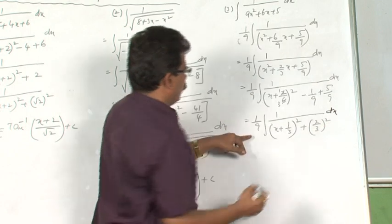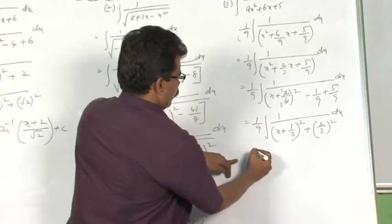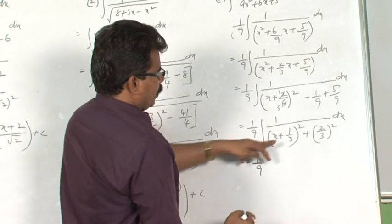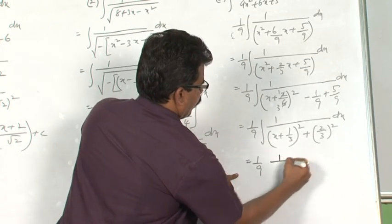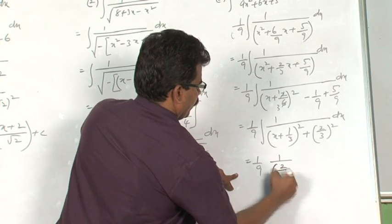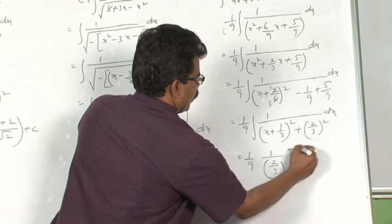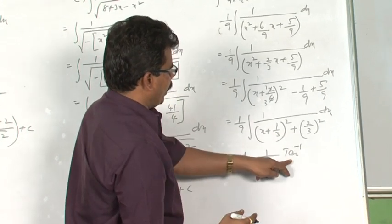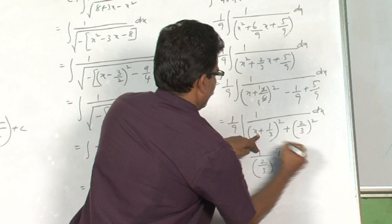Now, which is in the form of 1 by x square plus a square, that is equal to 1 by 9, 1 by a tan inverse x by a. That means 1 by 2 by 3 tan inverse x by a, which is x plus 1 by 3 by 2 by 3.